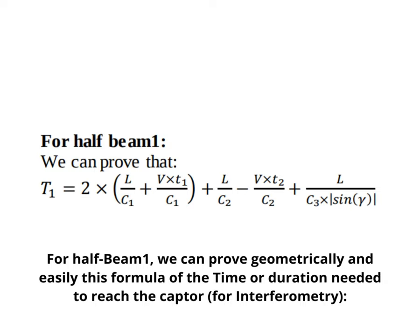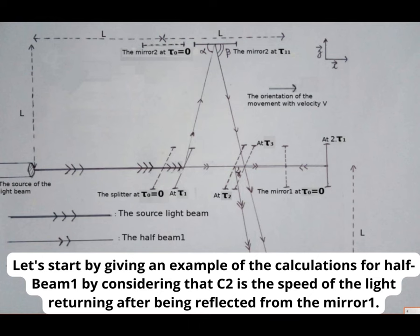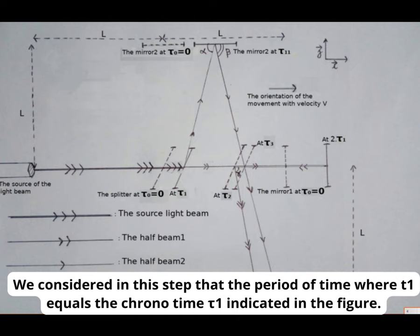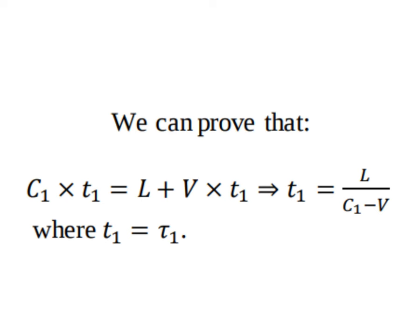For half beam 1, we can prove geometrically and easily this formula of the time or duration needed to reach the captor for interferometry. Let's start by giving an example of the calculations for half beam 1 by considering that c2 is the speed of the light returning after being reflected from the mirror 1. We consider in this step that the period of time where t1 equals the chrono time tau 1 indicated in the figure. We prove that.